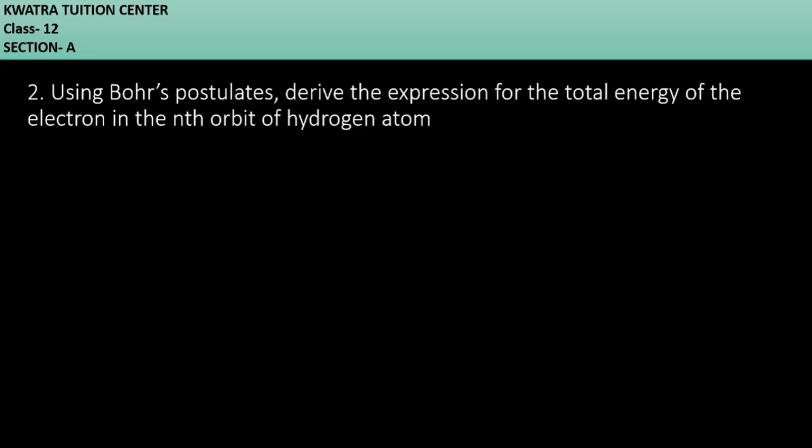So as we know that electron revolve around the nucleus and let's say that it is in the nth orbit. So what will the radius be? Rn. R into n.